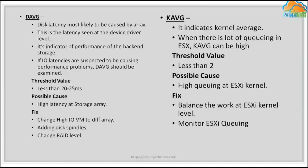The first counter is DAVG — disk latency, most likely caused by a storage array issue. If DAVG goes beyond 20 to 25 milliseconds, that is the moment you want to dig in — it indicates a performance bottleneck. Make sure when you look at the disk average, you check if it is going beyond the threshold value of 20 or 25.